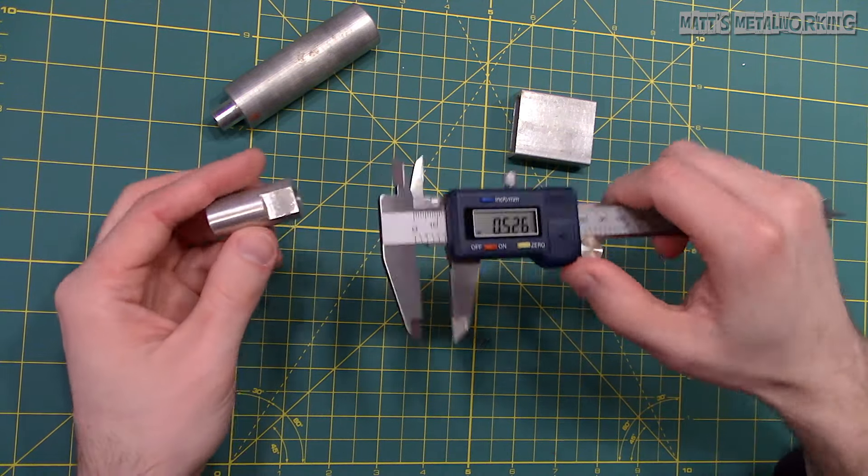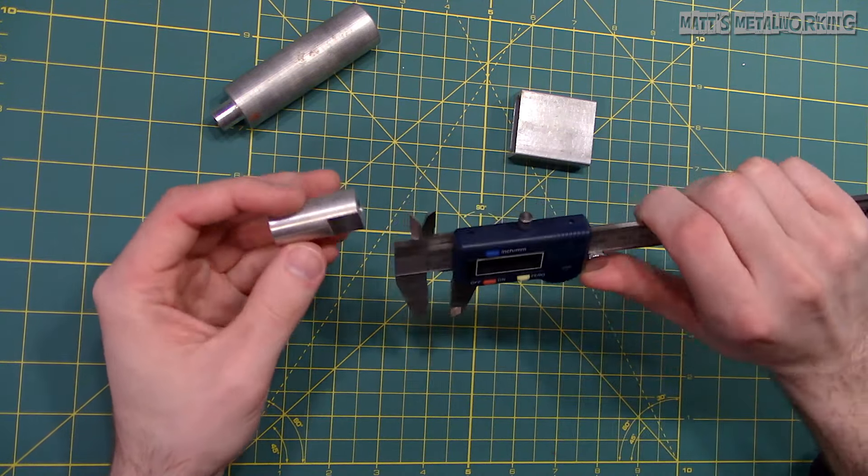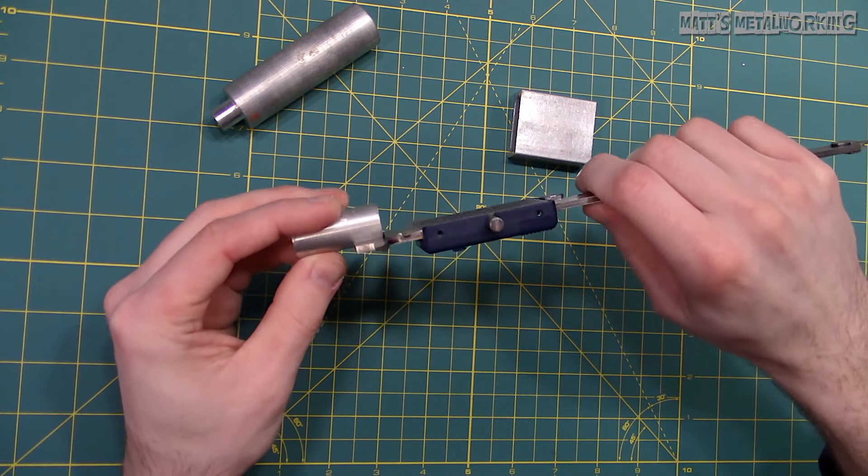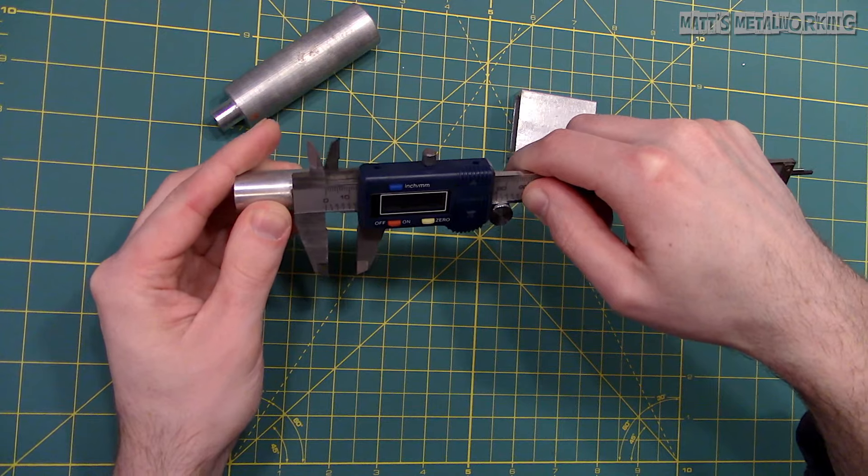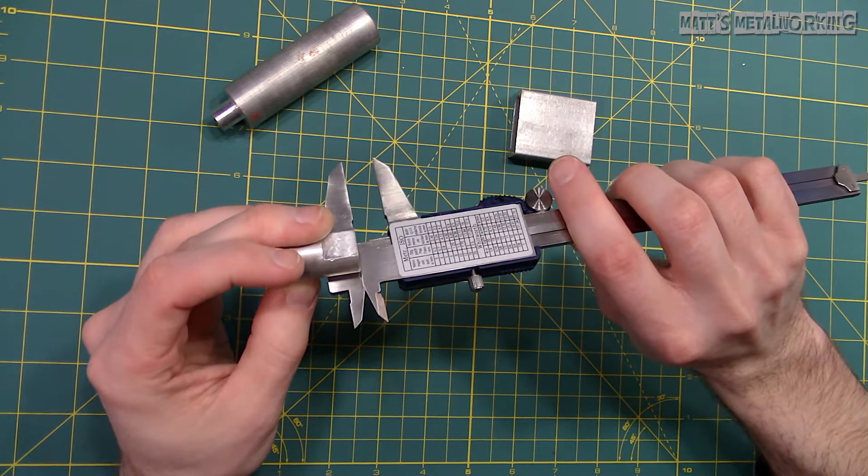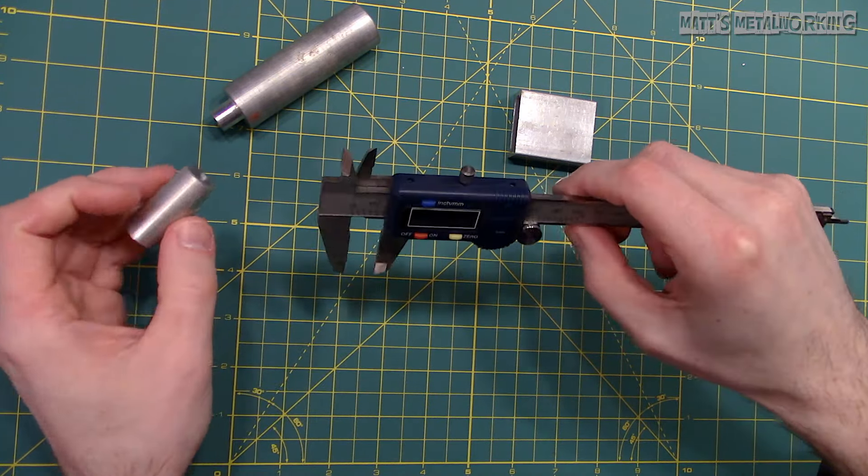Next using the step measurement close the caliper. Make sure it is zeroed. You may need to adjust the jaws slightly to help the measurement surfaces rest on the edge. Then push the caliper into place. Just to give you a view of how the step measurement sits with reference to the part.